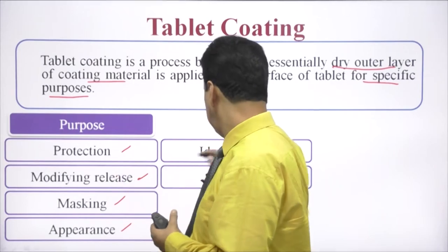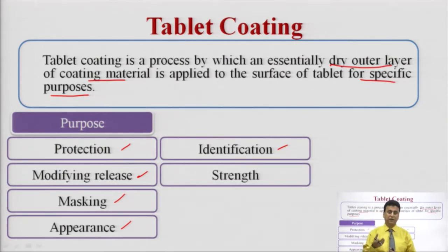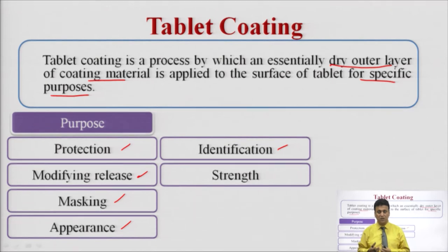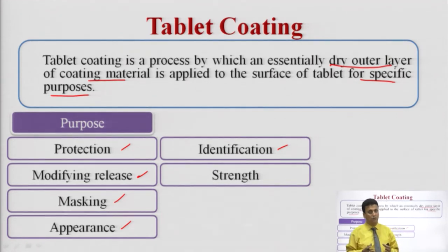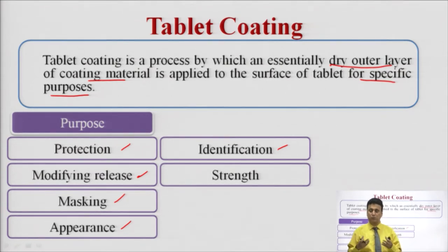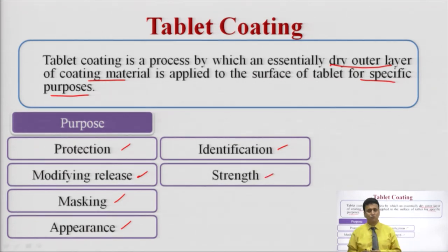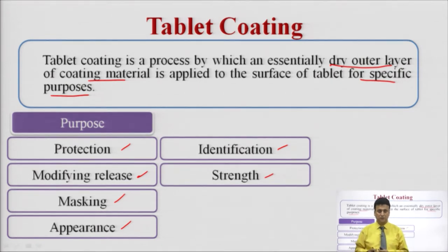Then we have identification. Suppose the company wants to identify its product, ya koi aisa product banana chahti hai jo patient easily identify kar sake — for example, children. We can do the coating with colours so that the product can be easily identified. In this way coating acts as a mode of identification. Then we have strength — coating also provides mechanical strength to the tablet.